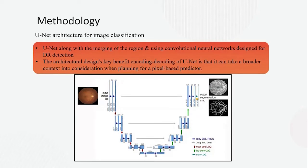Here is the U-Net architecture for image classification. U-Net, along with merging of regions and using convolutional neural networks, is designed for diabetic retinopathy detection. The key architectural benefit of U-Net is its encoding-decoding design — down-sampling and up-sampling — which can take border context into consideration for pixel-based prediction. Our model takes an input image and produces a segmentation map.